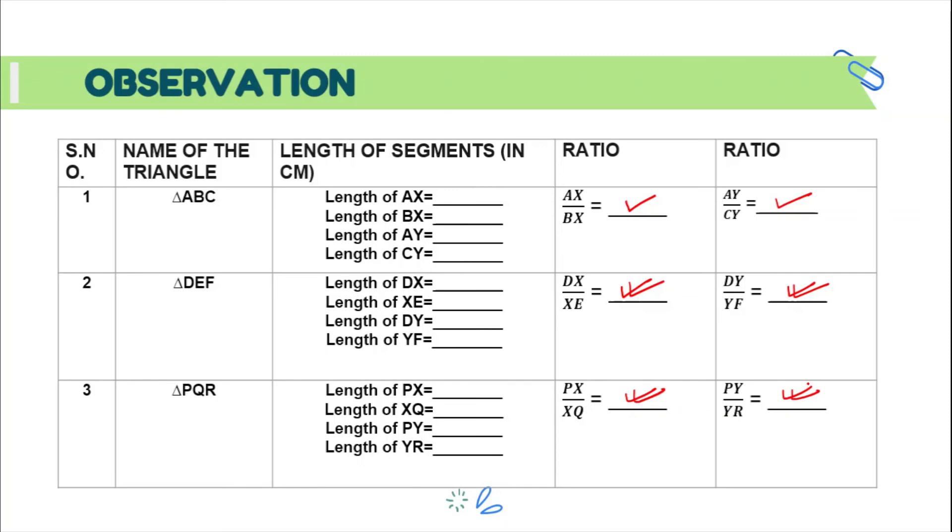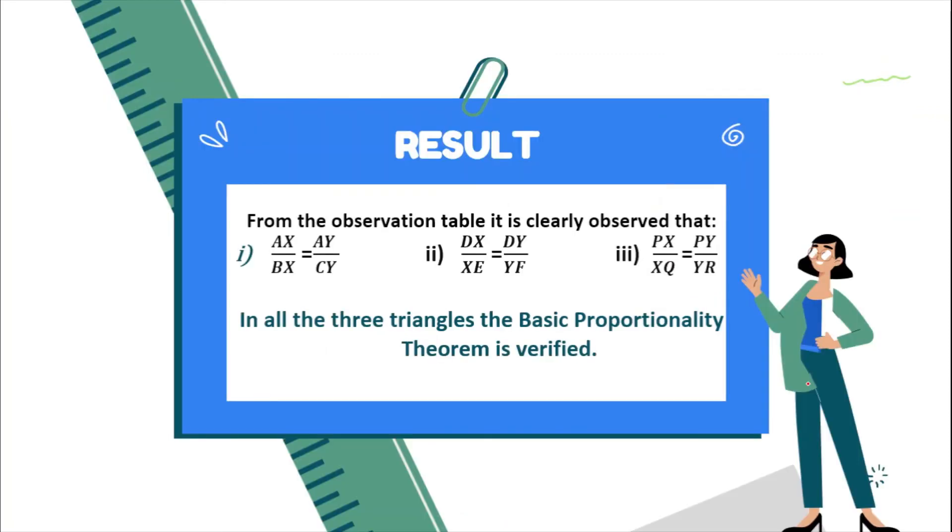In the result, you will see that AX upon BX is equal to AY upon CY for triangle ABC. And similarly, for the other two triangles, for second triangle DEF, DX upon XE is equal to DY upon YF. And for the third triangle PQR, PX upon XQ will be equal to PY upon YR. So, in all the three triangles, the basic proportionality theorem is verified.